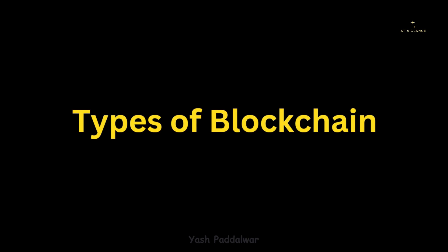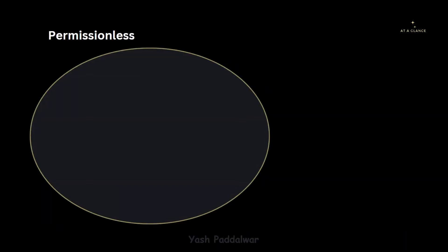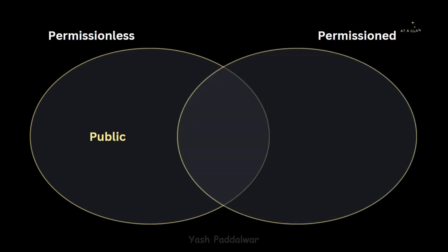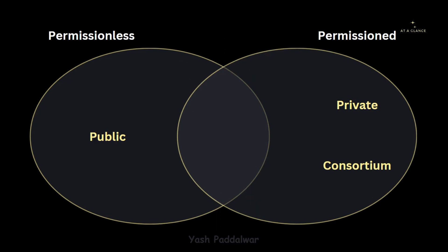Hello everyone, welcome back to my YouTube channel. In this video we'll be looking into the different types of blockchain. Blockchain is categorized into two types: the first is permissionless blockchain, which includes public blockchain. The second type is permissioned blockchain, which includes private blockchain and consortium blockchain. The combination of permissionless and permissioned blockchain is called hybrid blockchain.